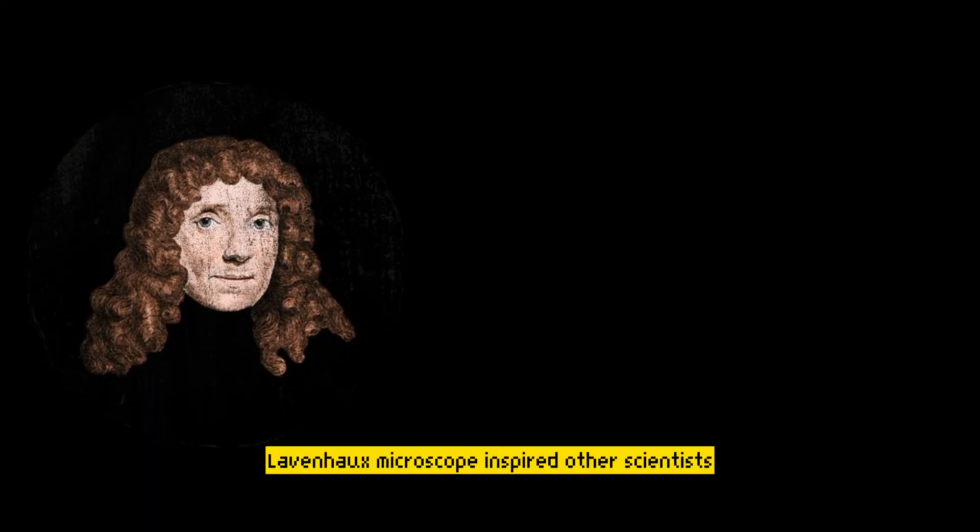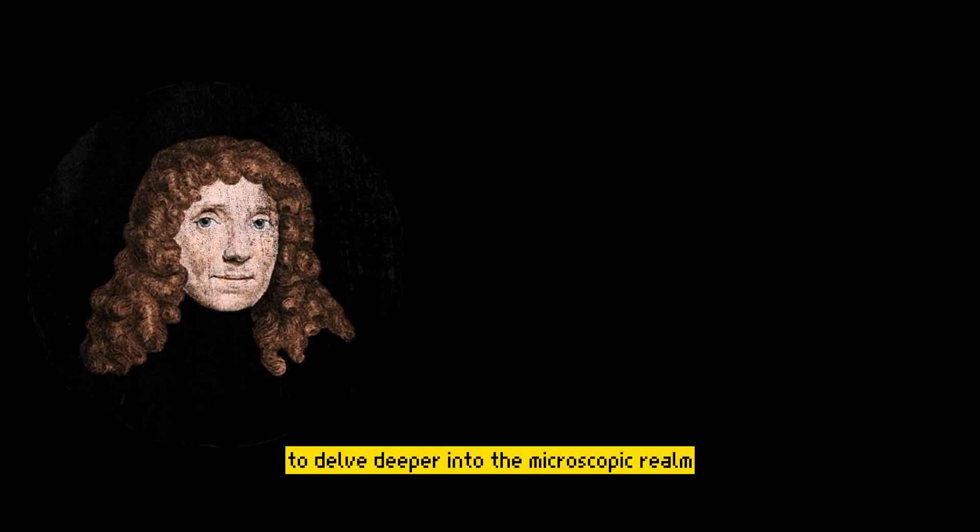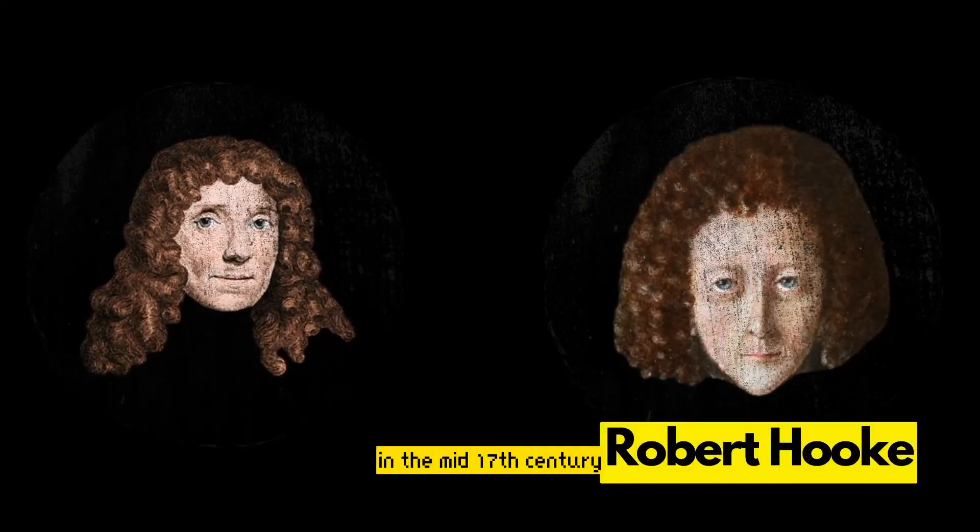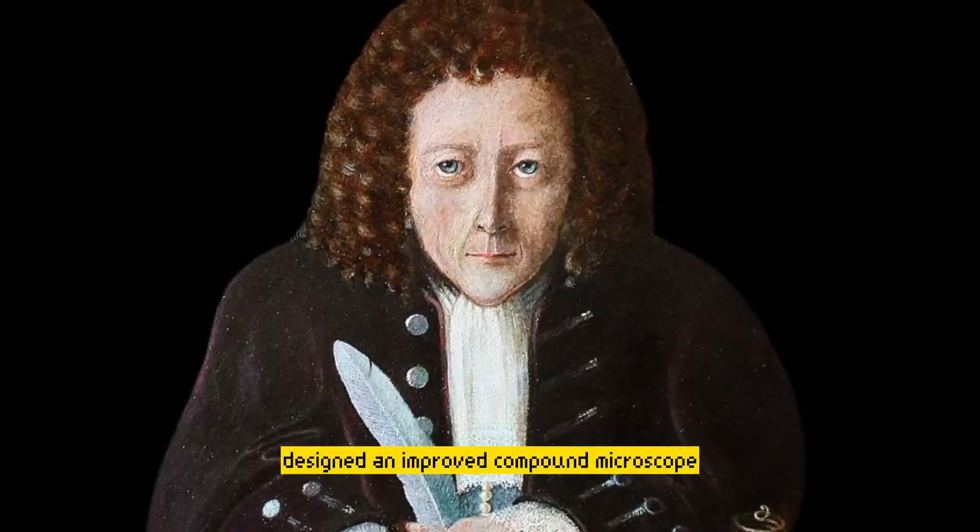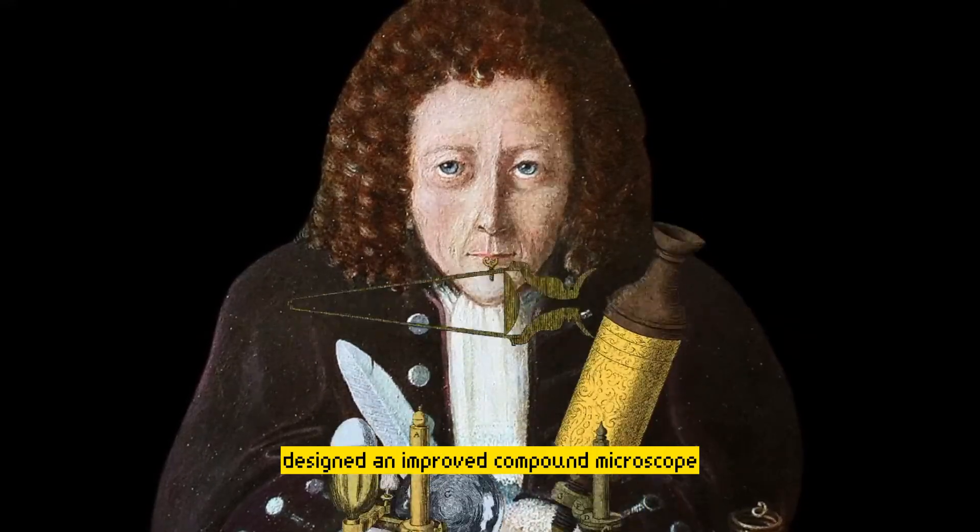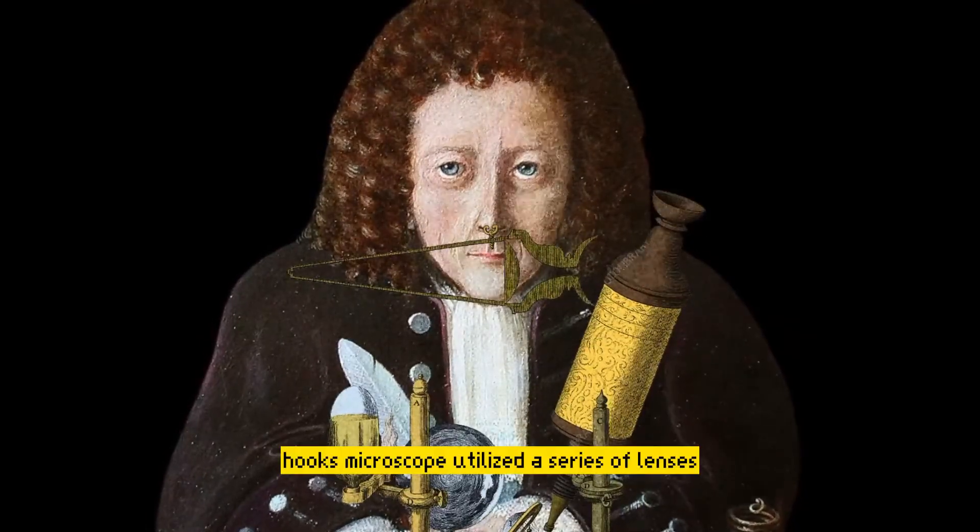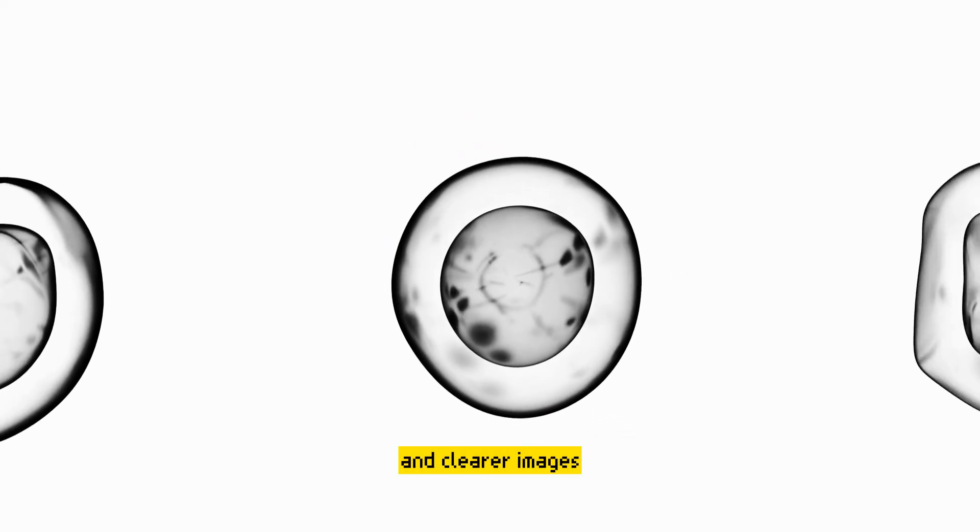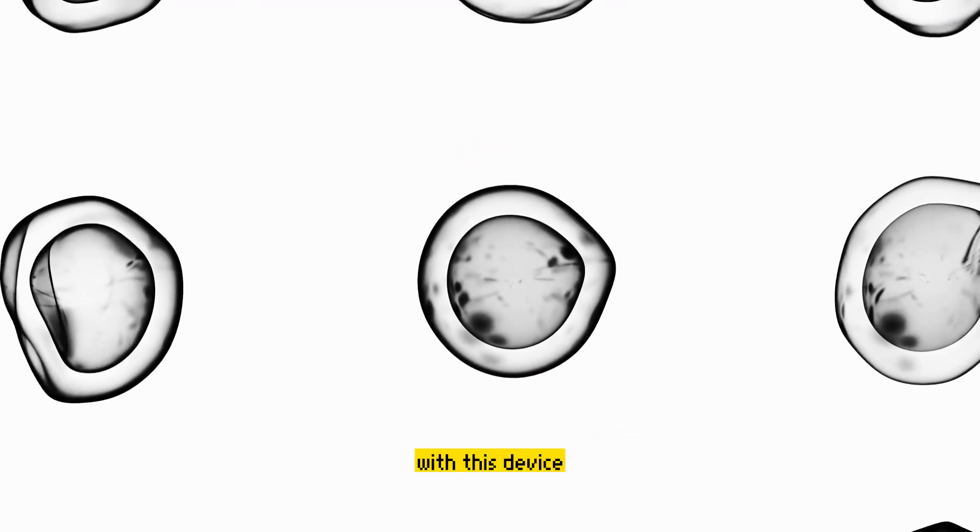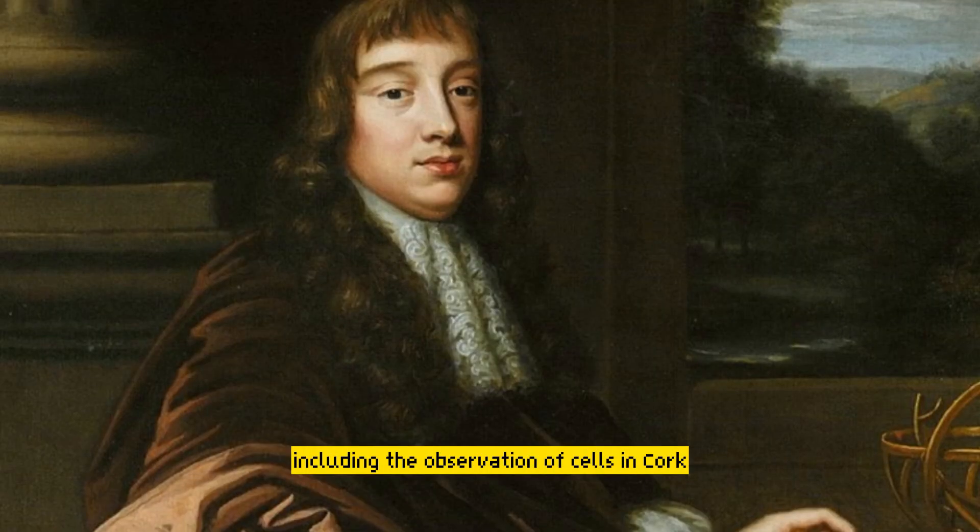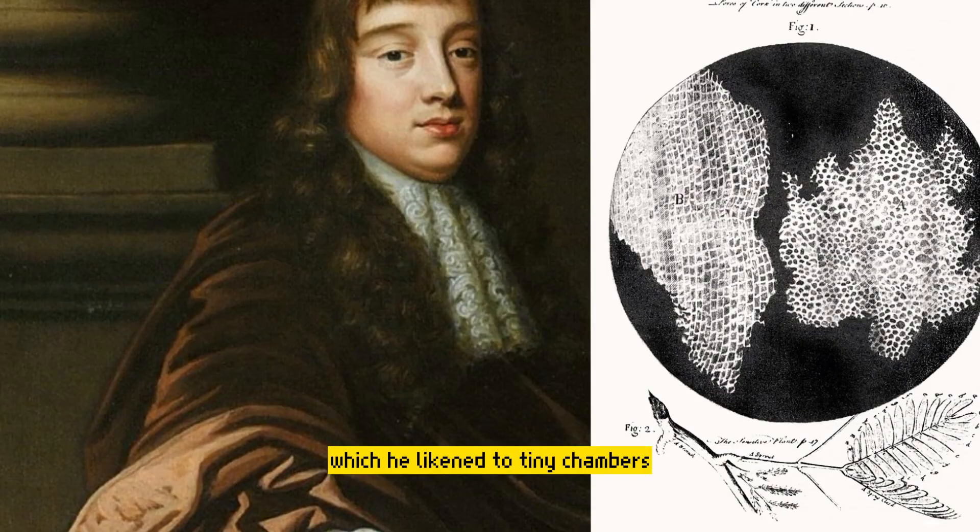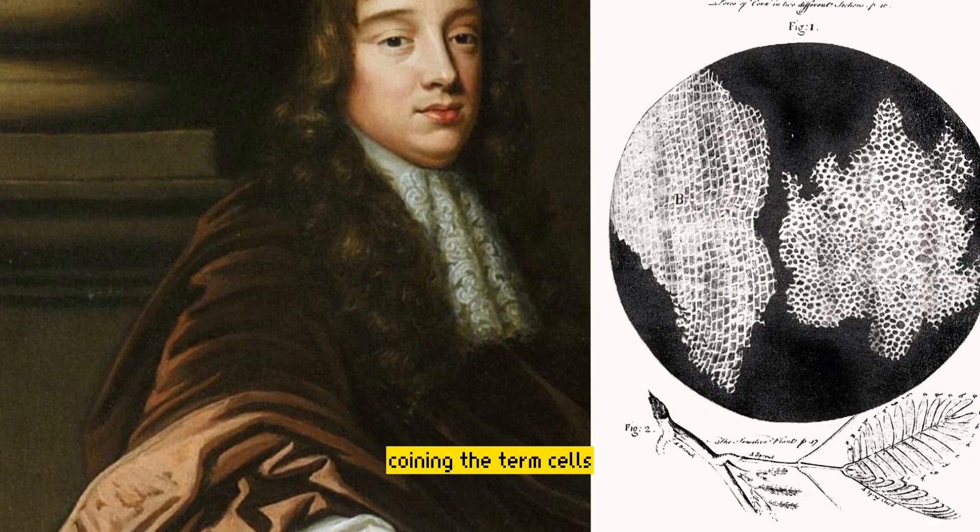Leeuwenhoek's microscope inspired other scientists to delve deeper into the microscopic realm. One such individual was Robert Hooke, an English scientist who, in the mid-17th century, designed an improved compound microscope. Hooke's microscope utilized a series of lenses, which allowed for higher magnification and clearer images. With this device, Hooke made groundbreaking discoveries, including the observation of cells in cork, which he likened to tiny chambers, coining the term cells.